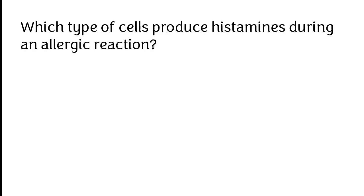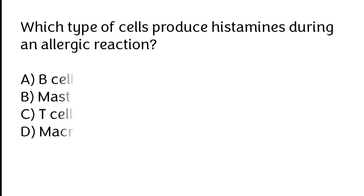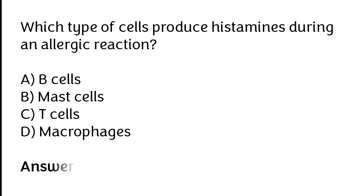Which type of cells produce histamines during an allergic reaction? B-cells, mast cells, T-cells, macrophages. The correct answer is option B. Mast cells are the type of cell which produce histamines during an allergic reaction.